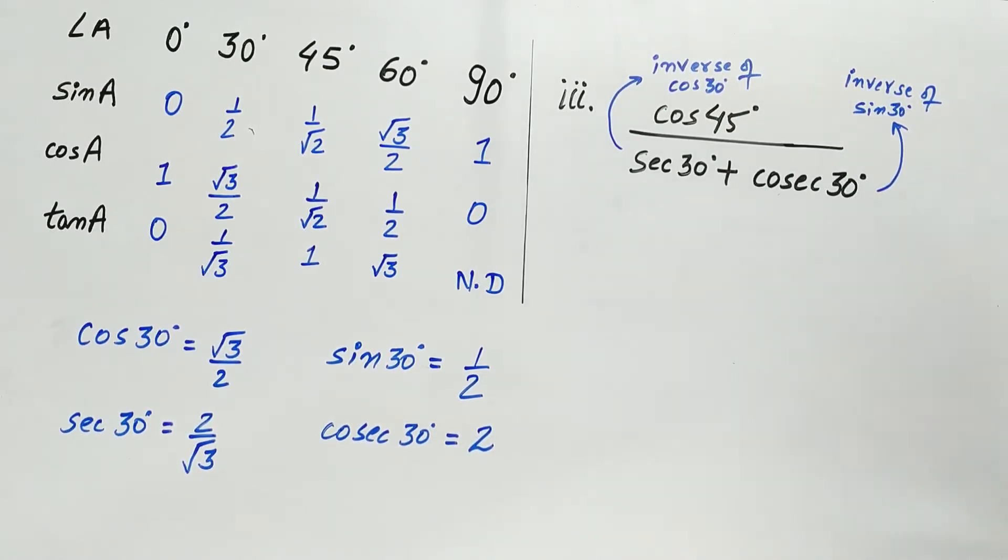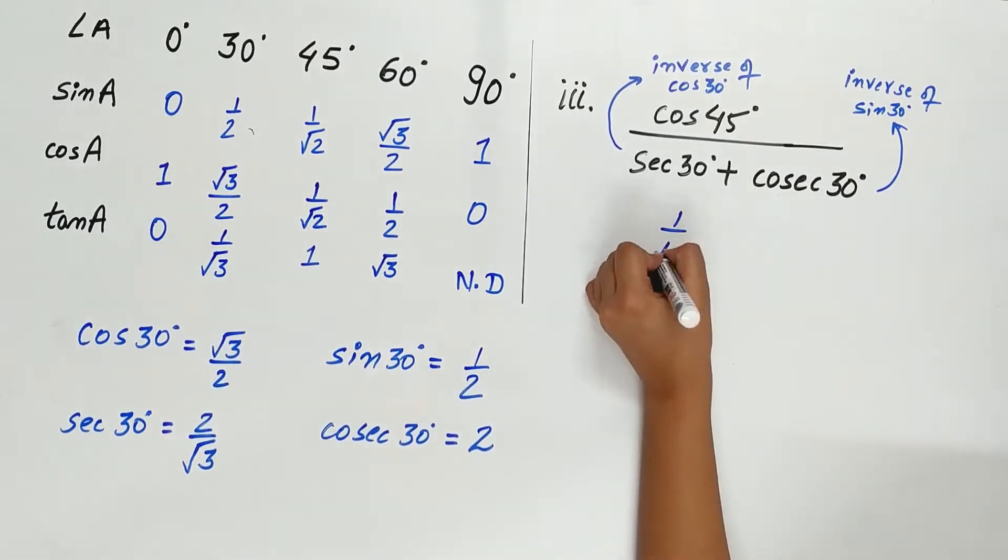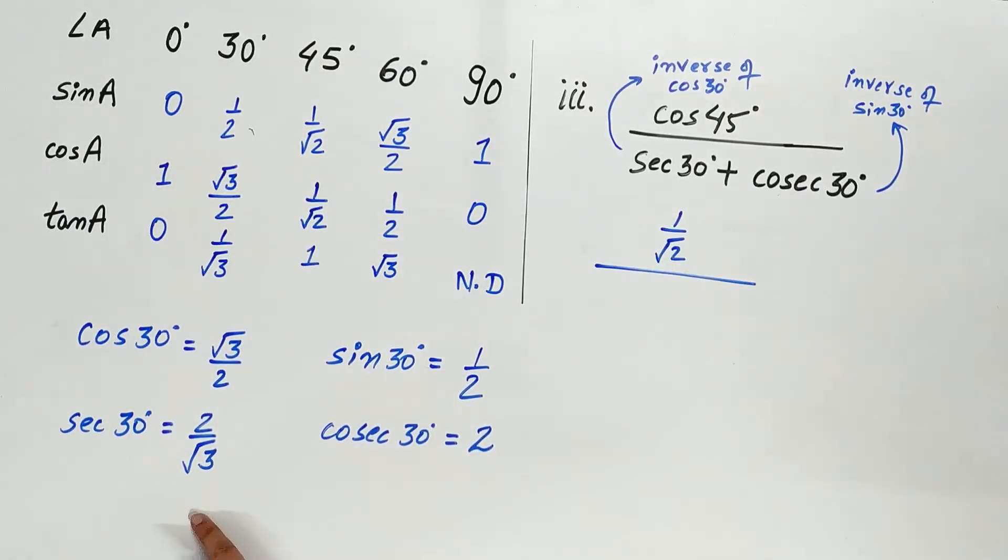Now substitute the values. Cos 45 is 1 by root 2. Sec 30 is 2 by root 3, and cosec 30 is 2.